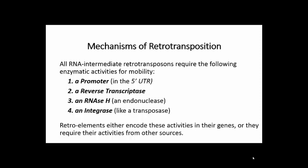All autonomous retrotransposons share the following features. They have a promoter in the 5' UTR from which they can be transcribed. They all require the activity of a reverse transcriptase that will generate a cDNA copy of the transposable element.